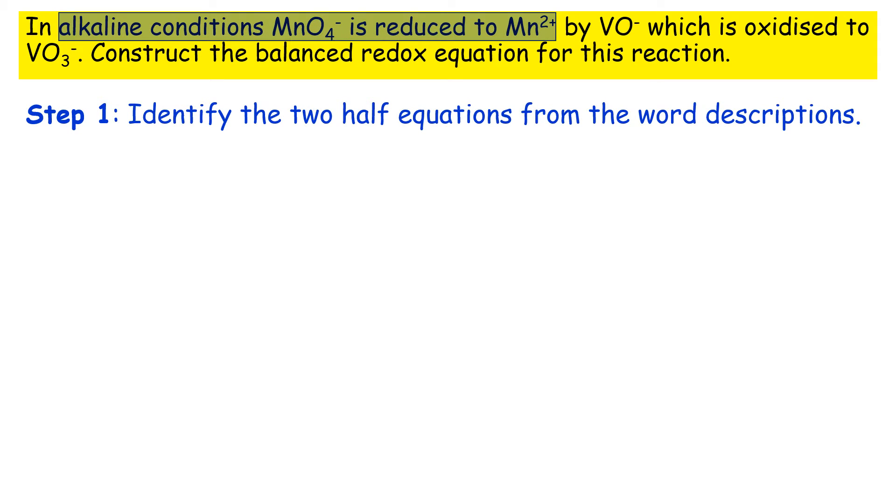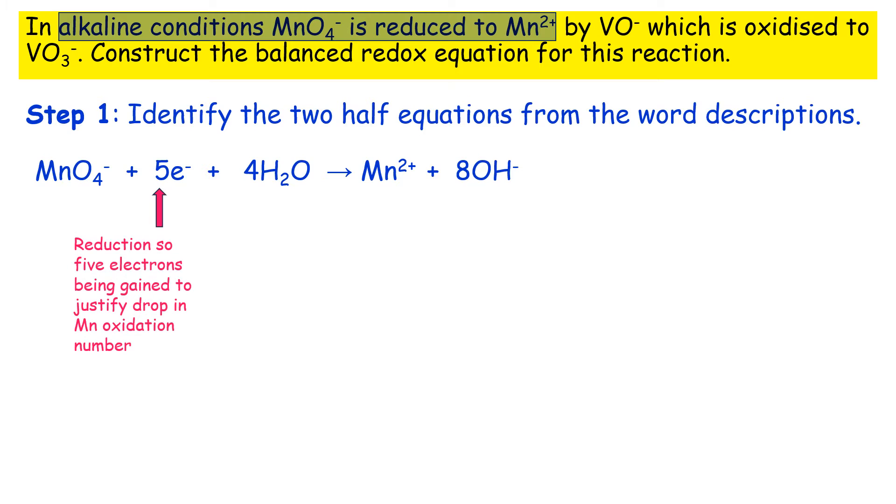So let's take the first part. Alkaline conditions: MnO4- is reduced to Mn2+. So you put the MnO4- on the left hand side and the Mn2+ on the right. You need five electrons and the reason for that is if we look at the oxidation number of manganese it goes from +7 down to +2.